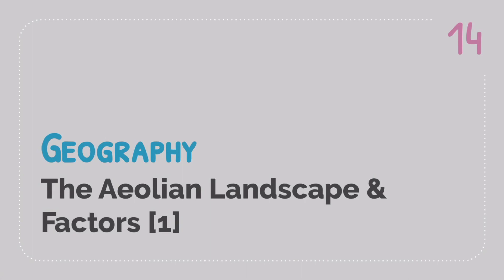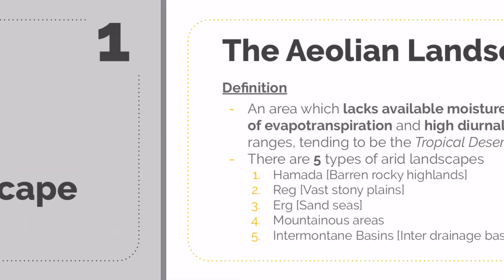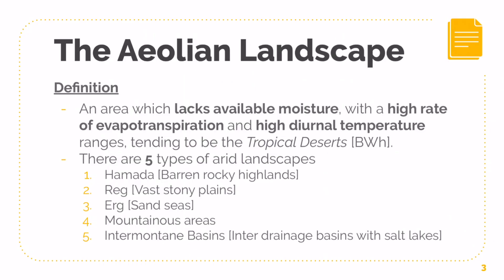In fact, I feel it's harder than your Karst, so let's go straight into the first part of this series. The Aeolian Landscape, by definition, is an area which lacks available moisture — your desert is a very clear example. It lacks available moisture, has a very high rate of evapotranspiration, and a higher diurnal temperature, meaning daily fluctuations in temperature are very, very huge.